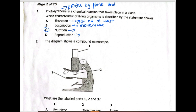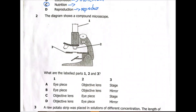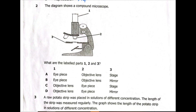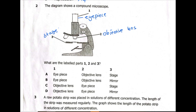Then reproduction is the process by which living organisms reproduce. Now let's move on to question 2. We have the diagram showing a compound microscope, and we have three structures to name: labeled parts 1, 2, and 3. Part 1 is the eyepiece. Part 2 is the objective lens. Part 3 is the stage. So the correct answer is A.